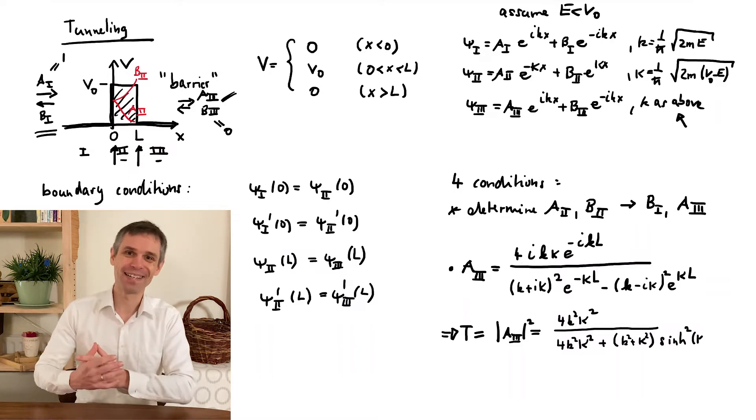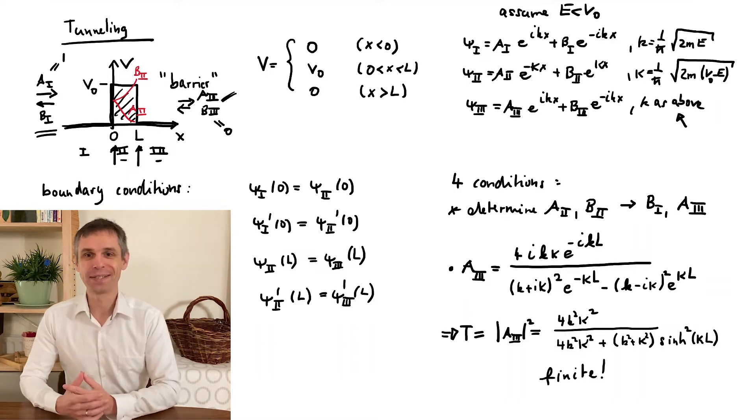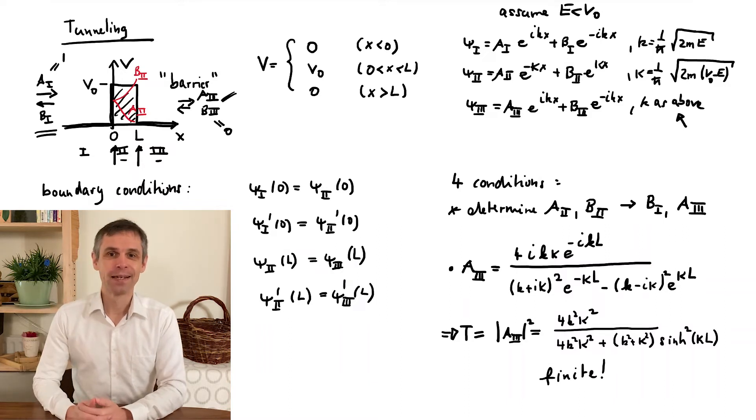Most importantly, it is finite. So quantum mechanically, the particle can emerge on the other side of the barrier. As before, this will just occur randomly.